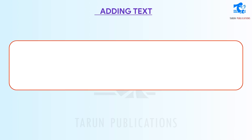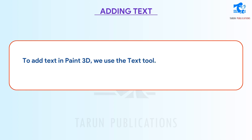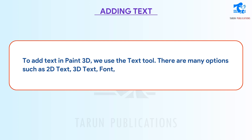Adding text. To add text in Paint 3D, we use the text tool. There are many options such as 2D text, 3D text, font, size, color, style, and alignment.